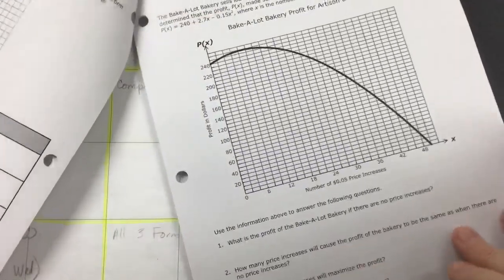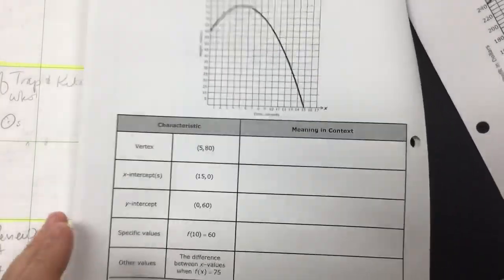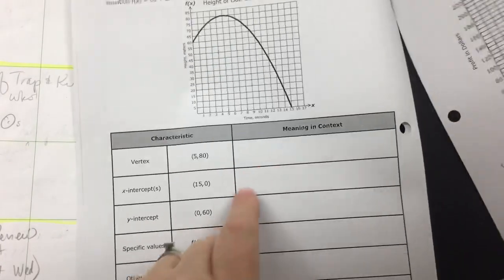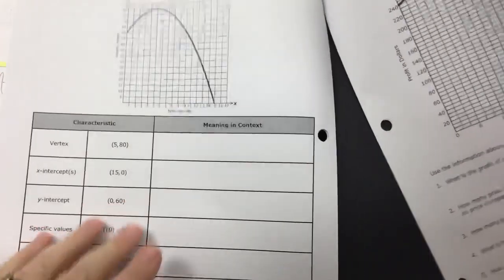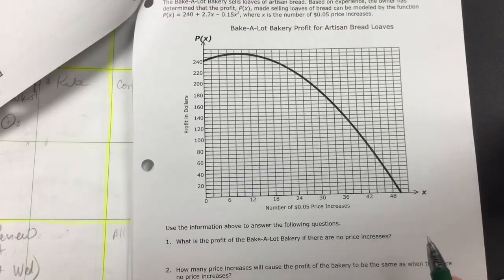So again, we're looking at quadratic functions in terms of context. Once you finish those, then on this activity, you're going to give me the context for each part, like what does the vertex mean in our problem, et cetera. And then you have some other questions.